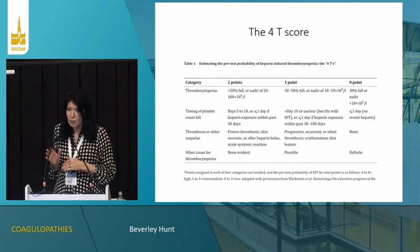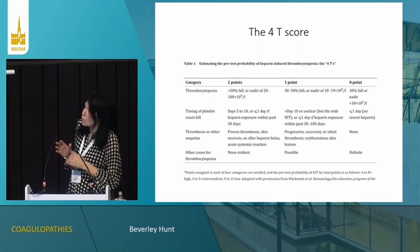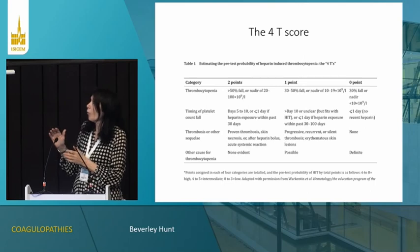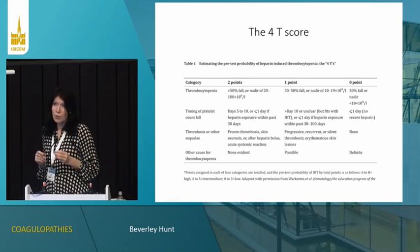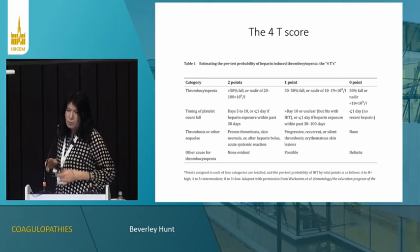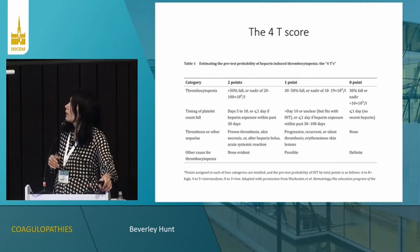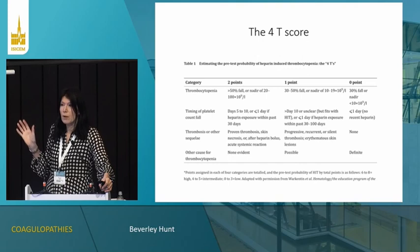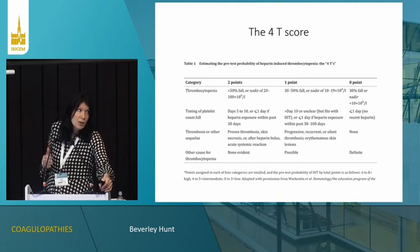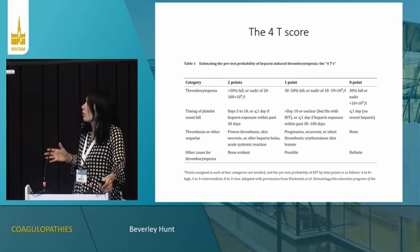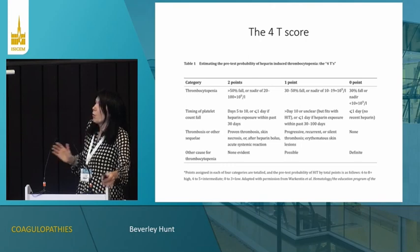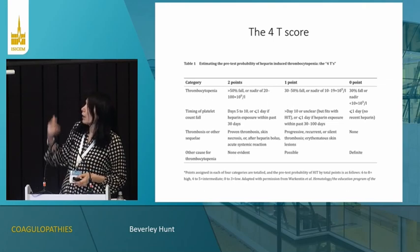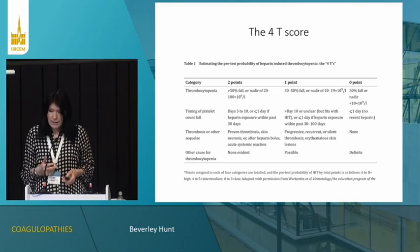Fresh thrombosis with HIT carries about a 20–30% mortality — not the best outcome. I would phone up my haematologist, as quite often we'd give intravenous immunoglobulin, and worst case scenario we would plasma exchange. But what we tend to do is stop the heparin and switch to one of the non-heparin drugs: argatroban, fondaparinux, and other drugs licensed in this area.